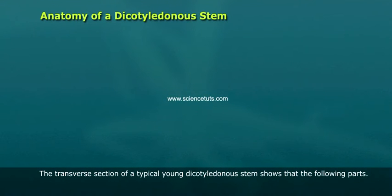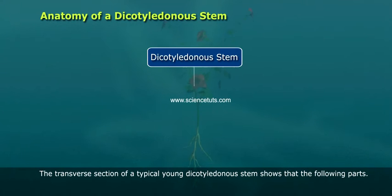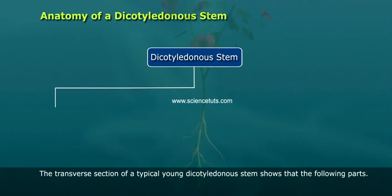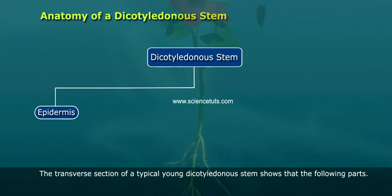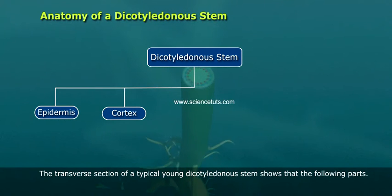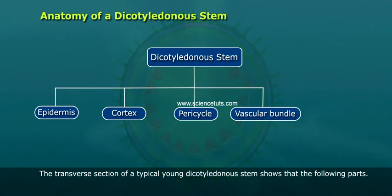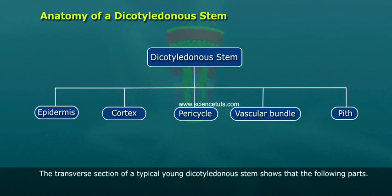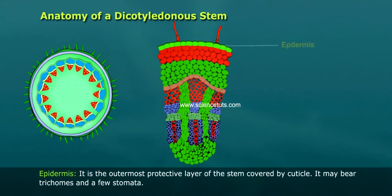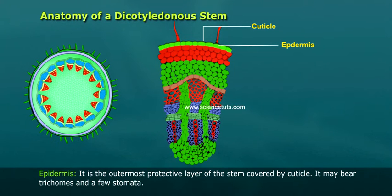Anatomy of a dicot stem. The transverse section of a typical young dicot stem shows the following parts: epidermis, cortex, pericycle, vascular bundle, pericycle and pith. Epidermis is the outermost protective layer of the stem covered by cuticle. It may bear trichomes and a few stomata.